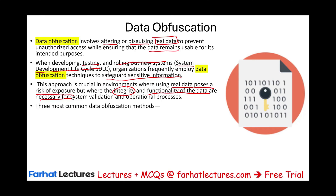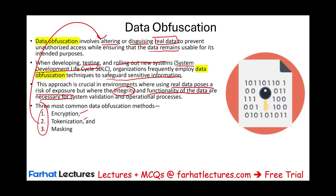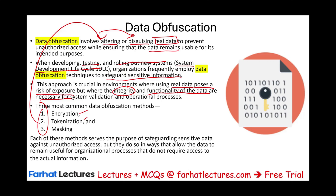The most common data obfuscation methods are encryption, tokenization, and masking. We're going to look at each one briefly now, and later we'll look at encryption and tokenization in more detail as part of hashing and masking. The whole purpose of using all three is to alter or disguise the data — change the data into something else — safeguarding sensitive data against unauthorized access while keeping the data useful for organizational processes.